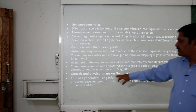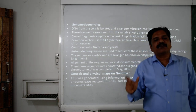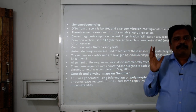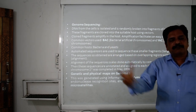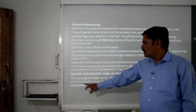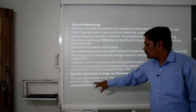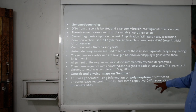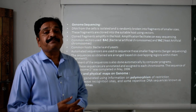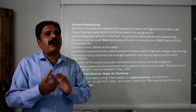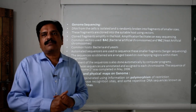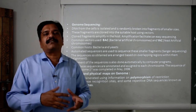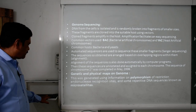Genetic and physical maps of the genome were also generated using information on polymorphism of restriction endonuclease recognition sites and repetitive DNA sequences known as microsatellites. Polymorphism means there are particular parts in the DNA where specific sites vary from one human being to the next. These parts are called polymorphic regions, and this phenomenon is named polymorphism.